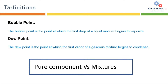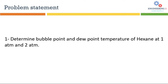Now let's practice these concepts in HySys. We will solve a problem to determine bubble point and dew point of a pure component. The problem statement is to calculate the bubble point and dew point temperature of hexane at one atmospheric pressure and two atmospheric pressure. Let's move to the HySys environment to solve this problem.